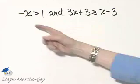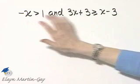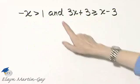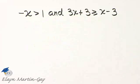Here I have a compound inequality, negative 2x greater than 1 and 3x plus 3 greater than or equal to x minus 3. Let's first solve each of these inequalities and then we'll worry about the and, which means the intersection of the two.